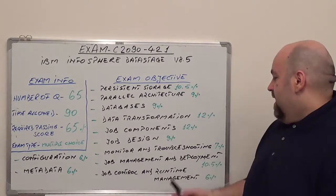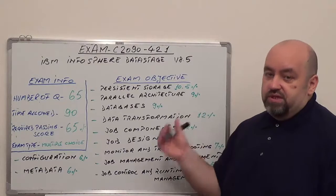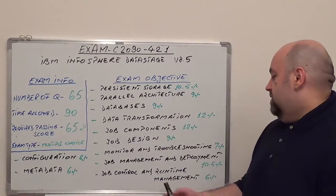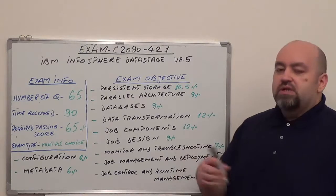After that, job management and employment, 10.5% from total operation. And the last one is going to be job control and runtime management, it's 6% from total operation.